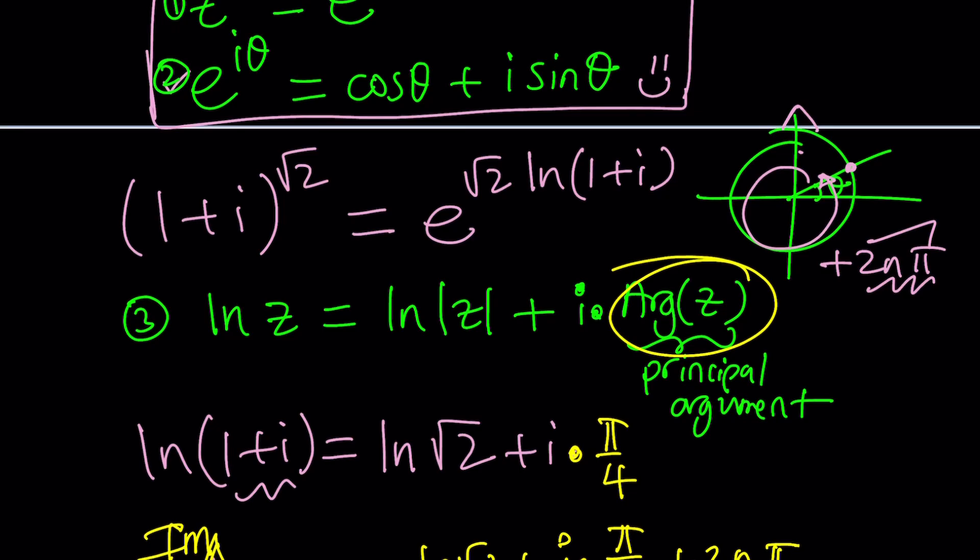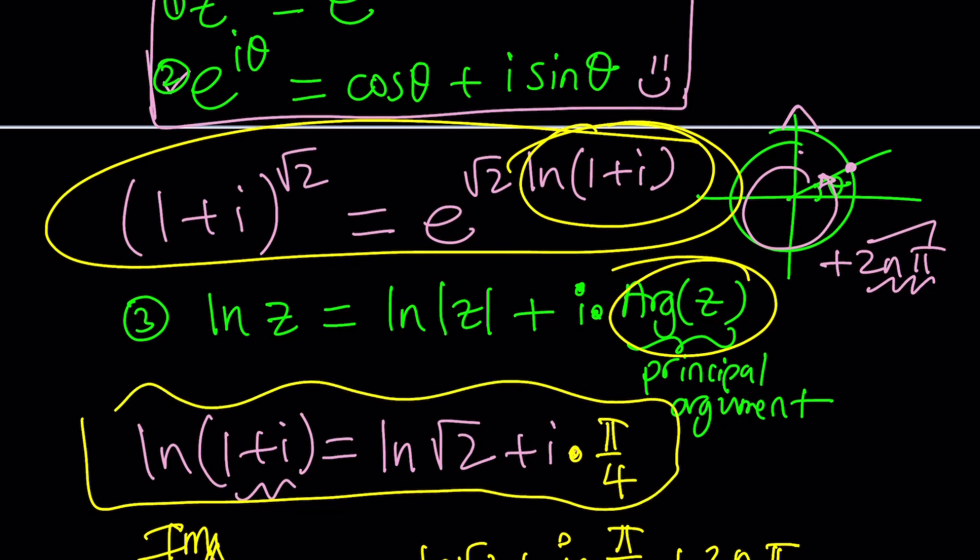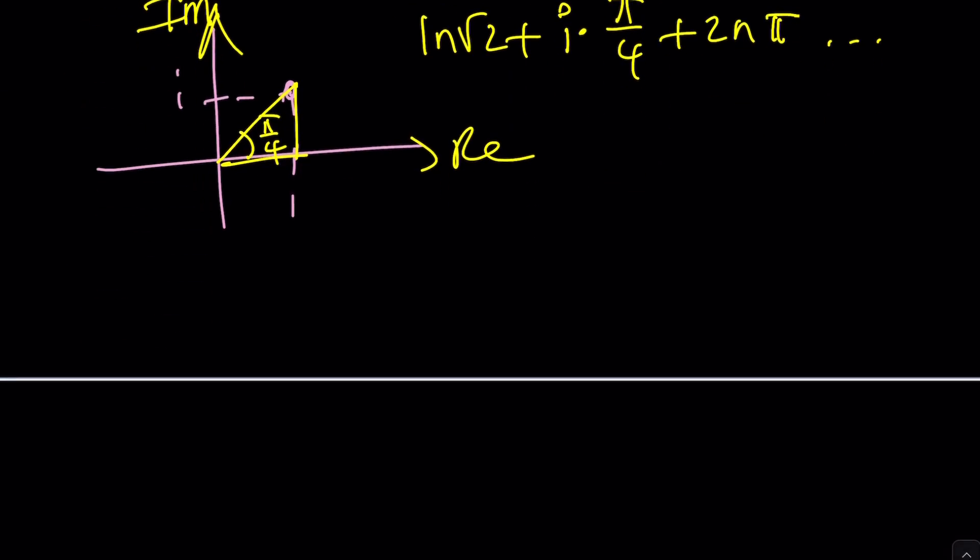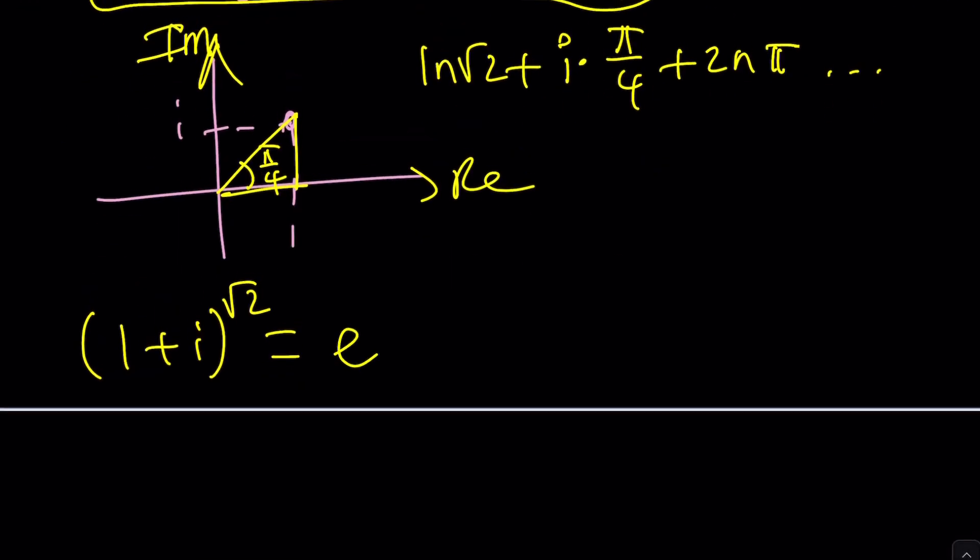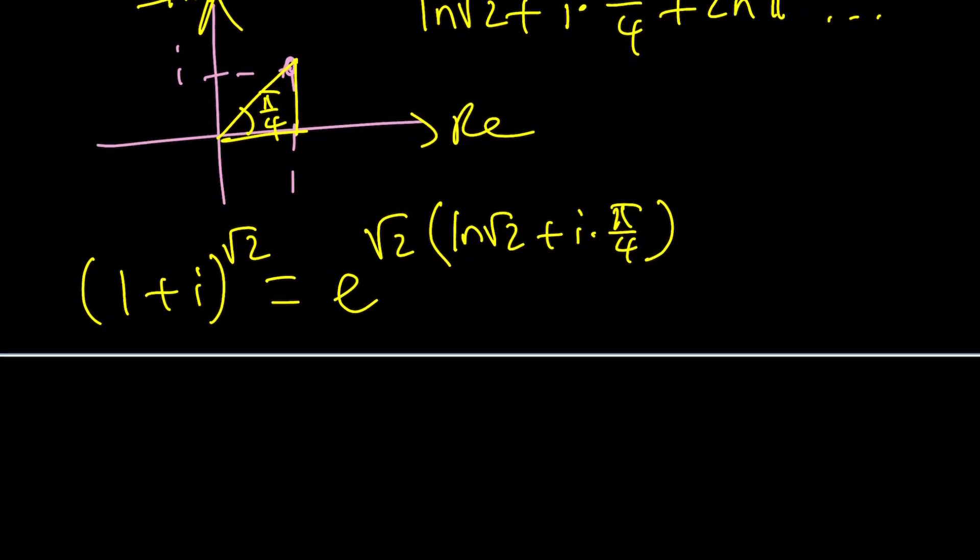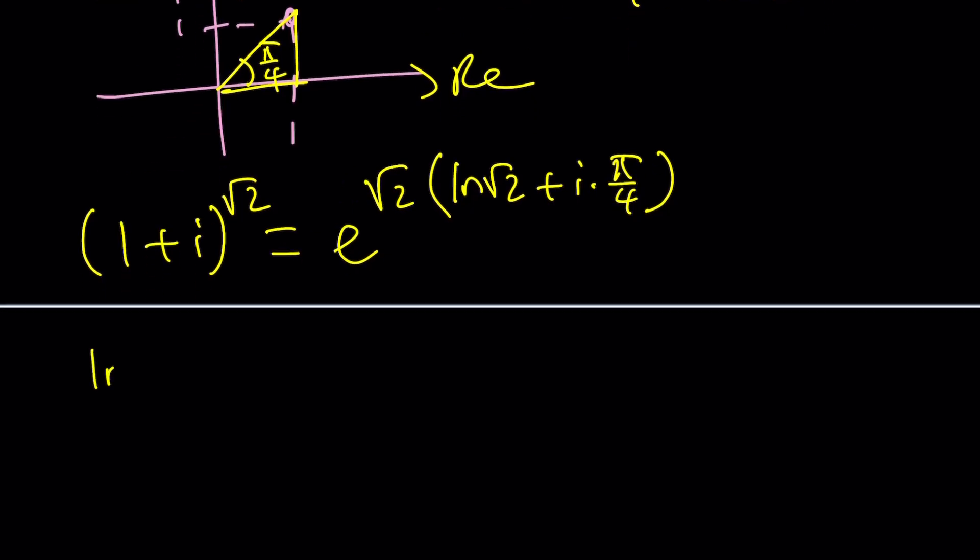So now we can go ahead and use this and replace ln 1 plus i with this. You ready? Okay, let's go. 1 plus i to the power root 2 is equal to e to the power square root of 2 multiplied by ln root 2 plus i times pi over 4. That's it. Easy, right? We can even come up with the formula. But guess what? We're not done yet.